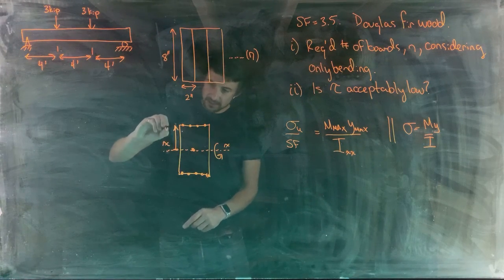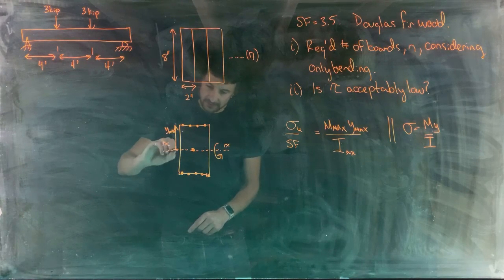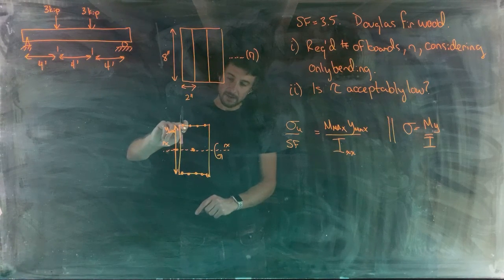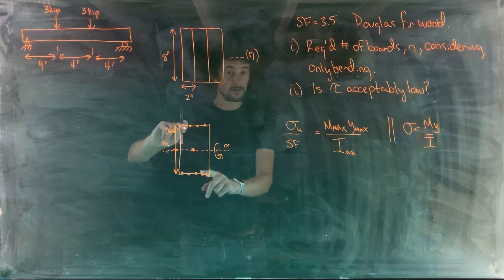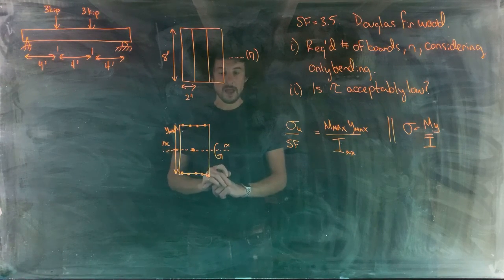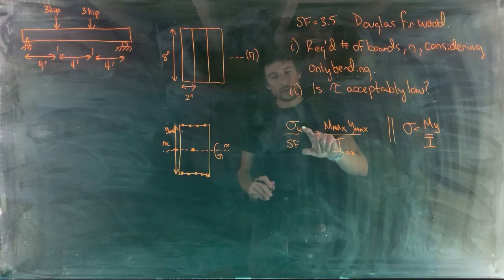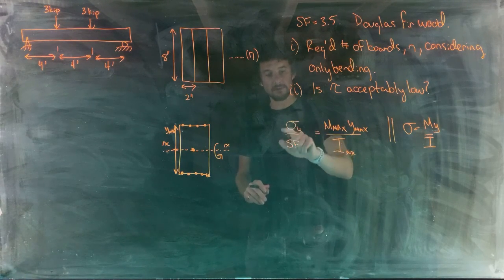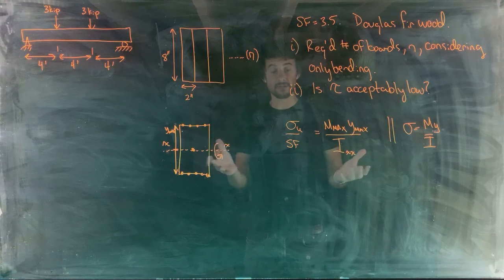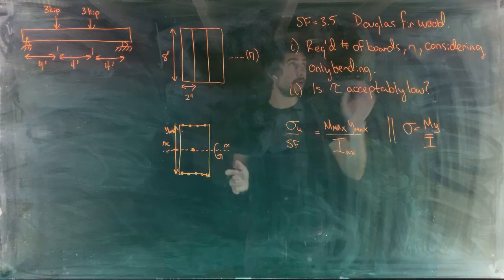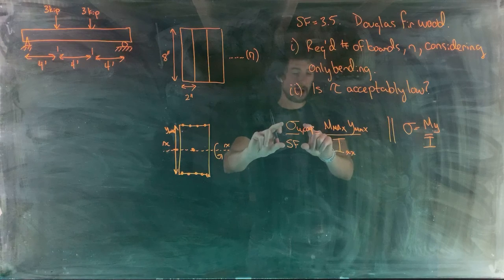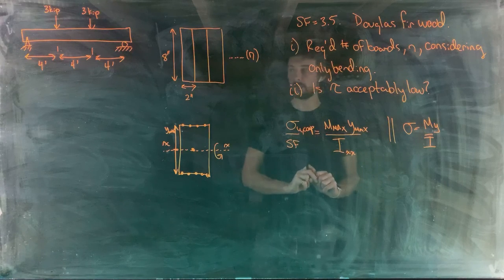Because y_max is the same for the top and bottom, the magnitude of the largest tensile stress equals the magnitude of the largest compressive stress. We use the lowest ultimate strength — for Douglas fir, that's the compressive strength — comparing allowable compressive stress to the maximum compressive stress in the beam.